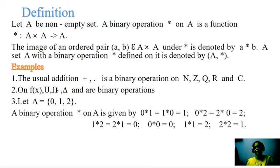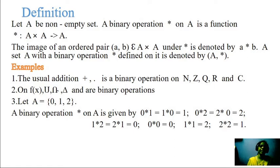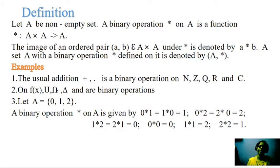The mathematical definition for binary operation: let A be a non-empty set. A binary operation star on A is a function where star is defined as A×A → A. The image of an ordered pair (A, B) belonging to A×A under star is denoted by A star B. A set A with a binary operation star defined on it is denoted by (A, star). For example, the usual addition (+) is a binary operation on N (natural numbers), Z (integers), Q (rational numbers), R (real numbers), and C (complex numbers).